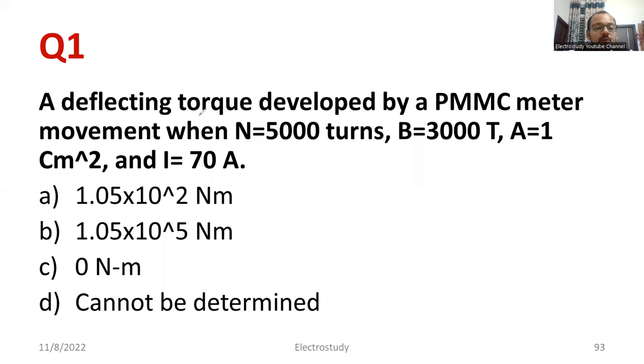A deflecting torque developed by PMMC meter movement when the number of turns equal to 5000. So let us note down N is equal to 5000. And the magnetic flux density is 3000 Tesla, so note down accordingly. And the area of the coil is equal to 1 centimeter square, 1 centimeter square means 1 into 10 to the power minus 4 meter square. And current flowing through the coil is 70 amps. It works based on the principle similar to that of DC motor.